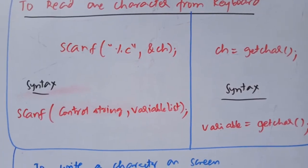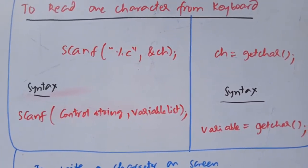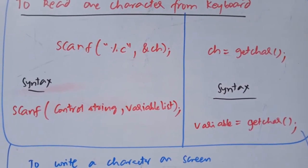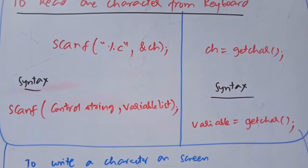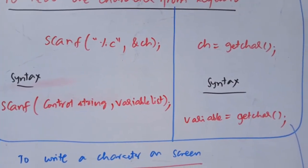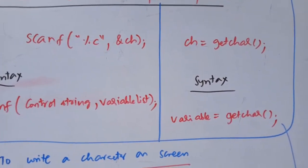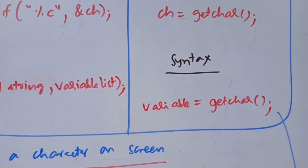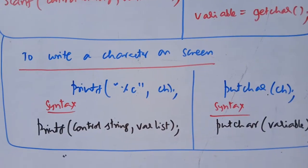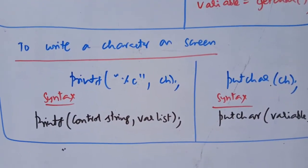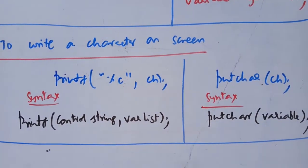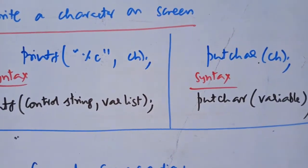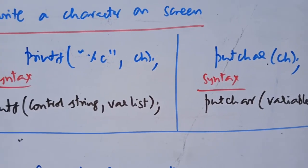Now, what is the difference? scanf can be used to read any type of data, but with getchar the variable must be a character variable only. Similarly, to write a character on screen, we can use either printf or putchar. The putchar syntax is: putchar within brackets, followed by a character variable.